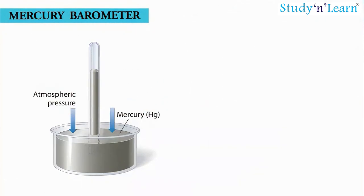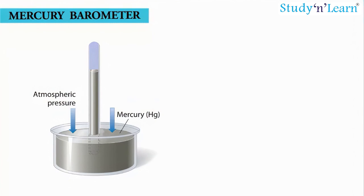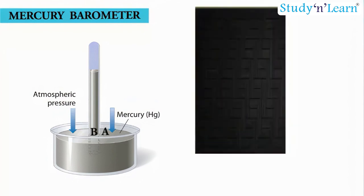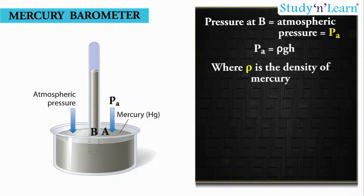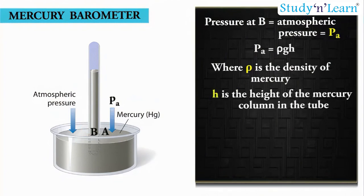The space above the mercury column in the tube contains only mercury vapour whose pressure P is so small that it may be neglected. The pressure inside the column at point A must be equal to the pressure at point B, which is at the same level. Pressure at B equals atmospheric pressure P_A, where rho is the density of mercury and H is the height of the mercury column in the tube.